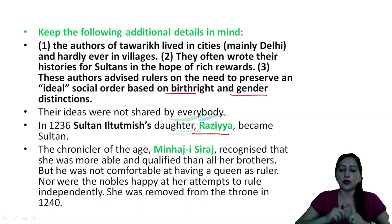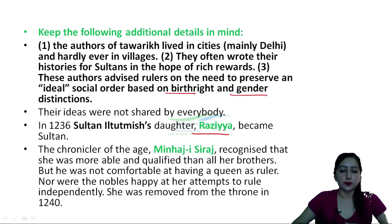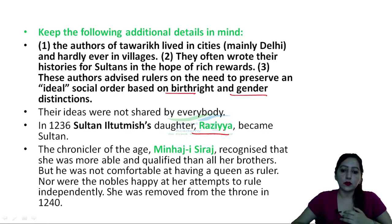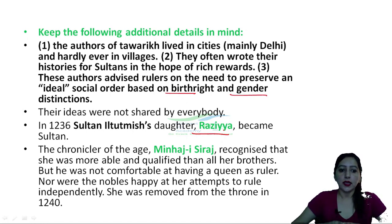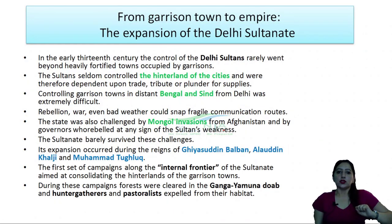However, not every person followed these ideas. For example, Sultan Iltutmish appointed his daughter Razia as Sultan in 1236. The chronicler Minhaj-i-Siraj recognized that Razia was more able and qualified than all her brothers. Iltutmish chose ability and qualification over gender distinctions and birthright. But her brothers were not comfortable with their sister ruling as a queen, and even the nobles were unhappy. That is why a conspiracy was made against Razia, and she was removed from the throne in 1240.